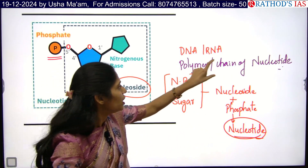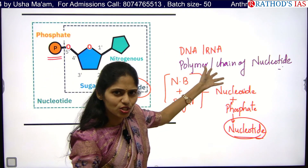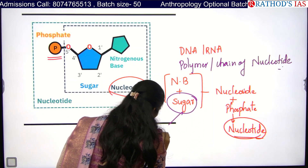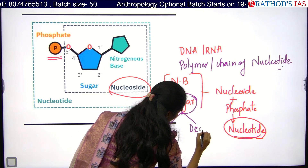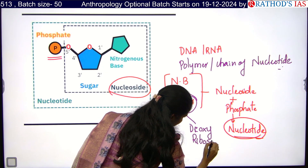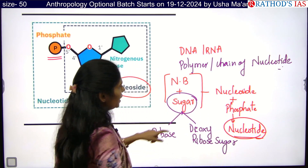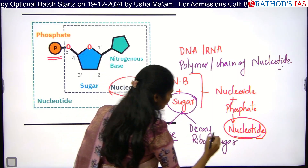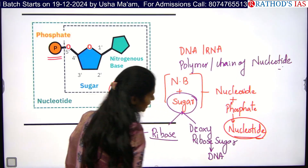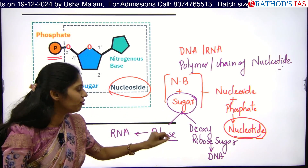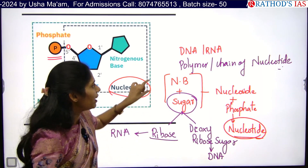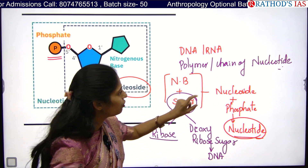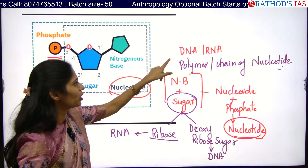Another difference between DNA and RNA is based on the sugar. If the nucleoside has ribose sugar, it forms RNA. If the nucleotide has deoxyribose sugar, it forms DNA. In ribose sugar, if you remove one oxygen, that forms deoxyribose sugar. So a chain or polymer of nucleotides formed with ribose sugar is called RNA, and one formed with deoxyribose sugar is called DNA.